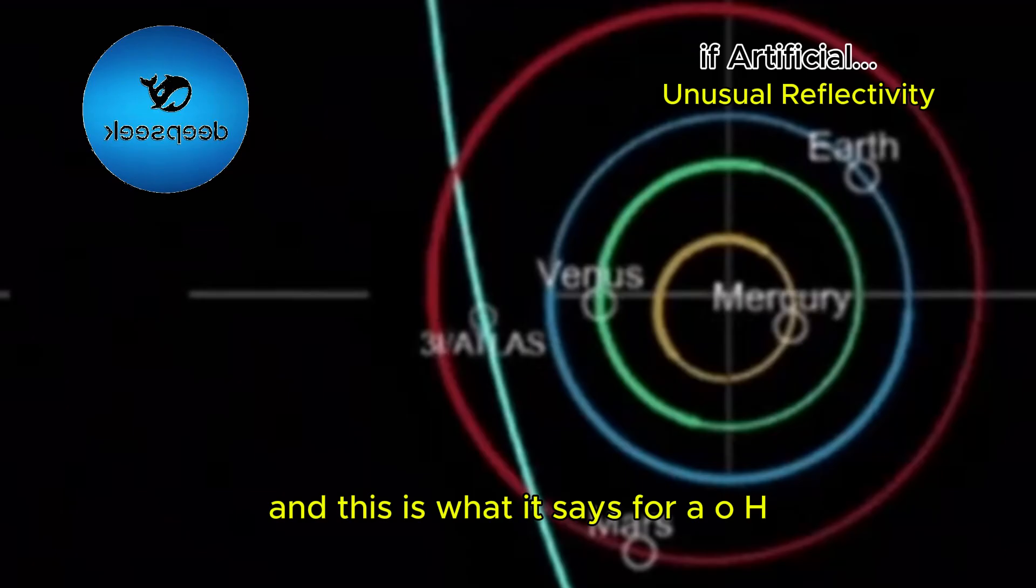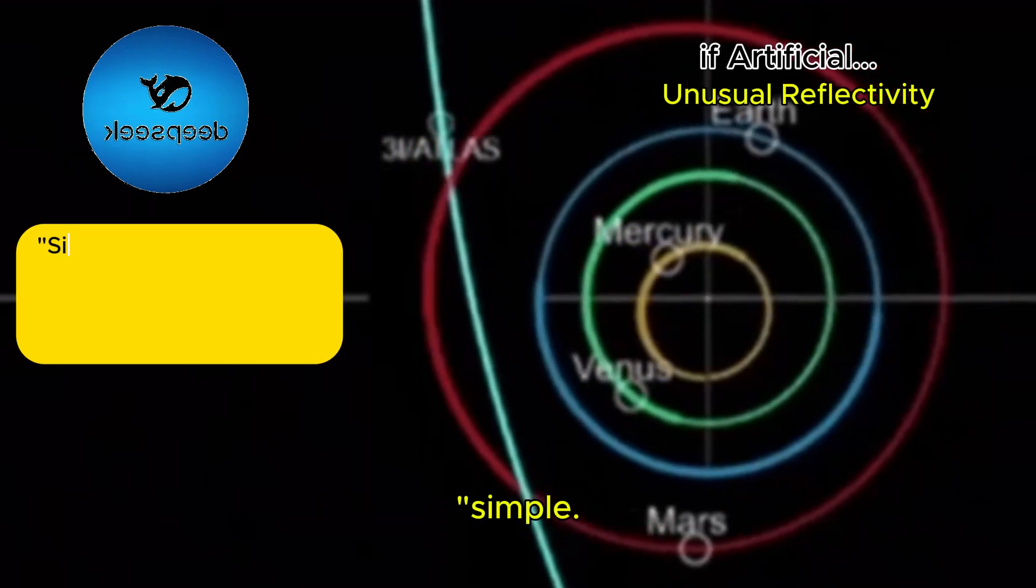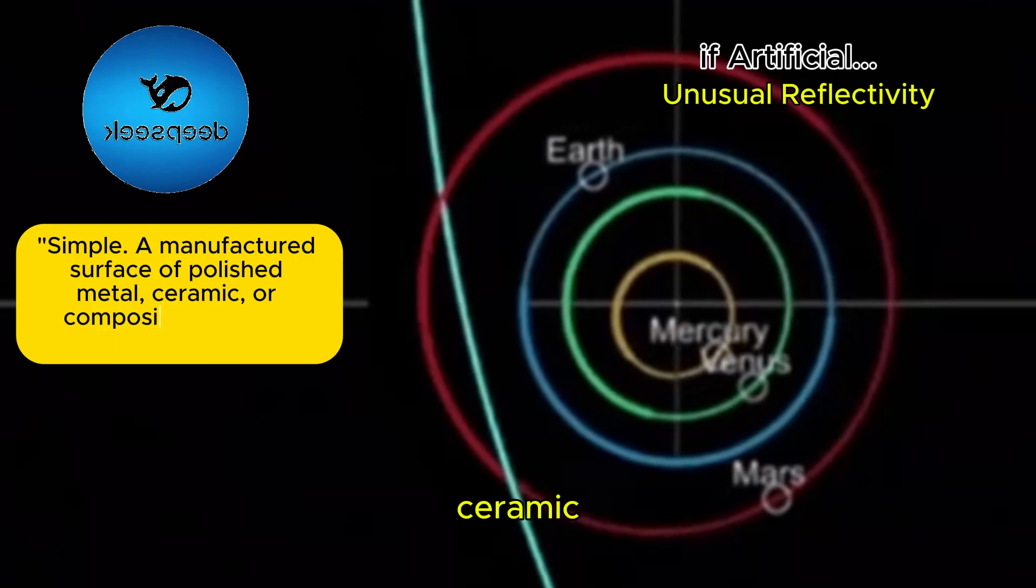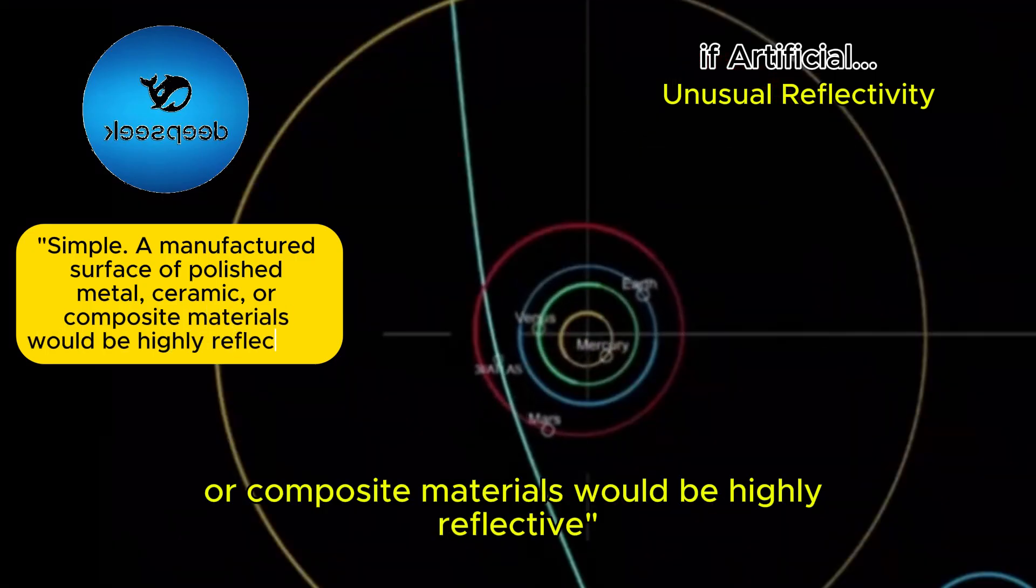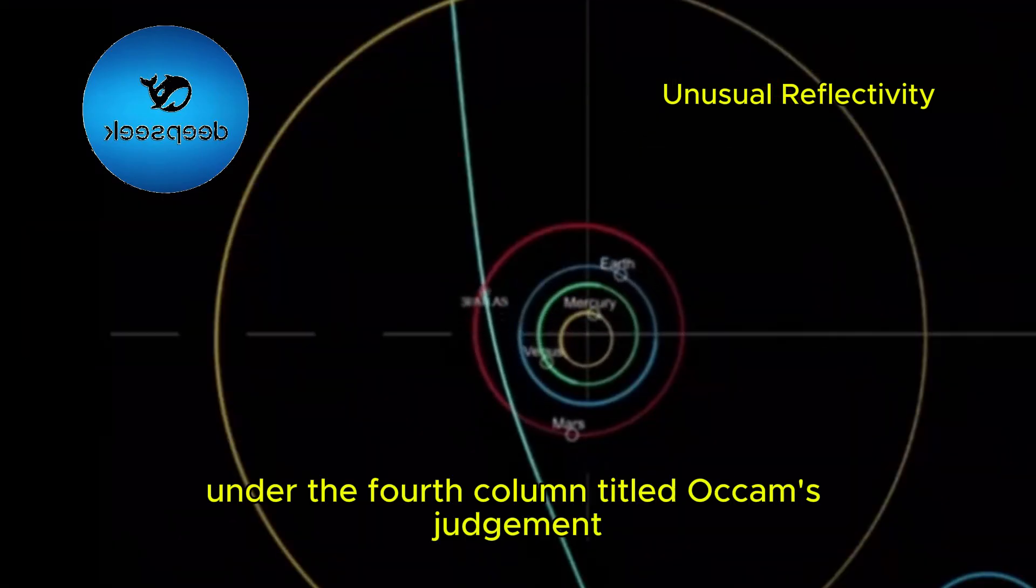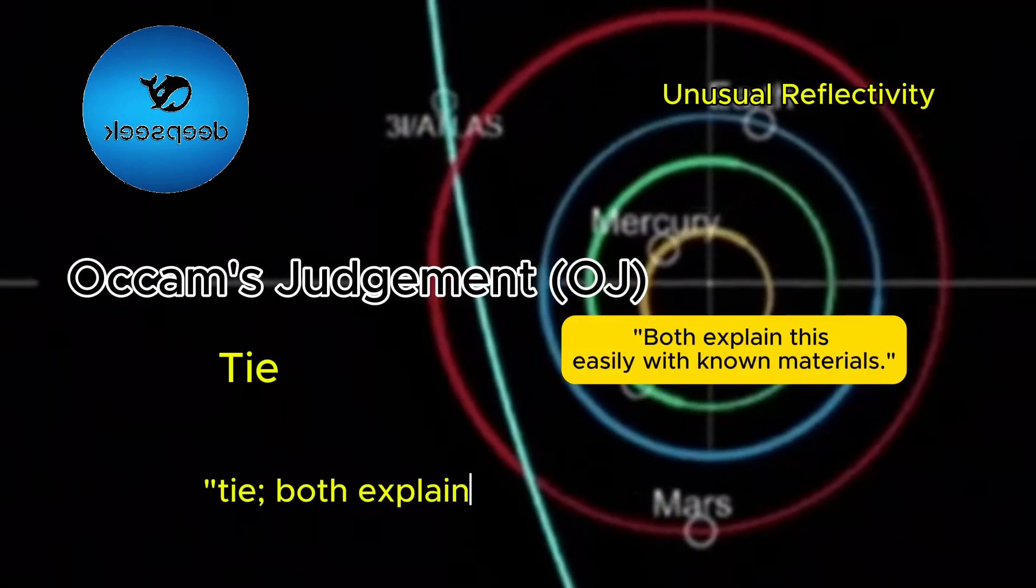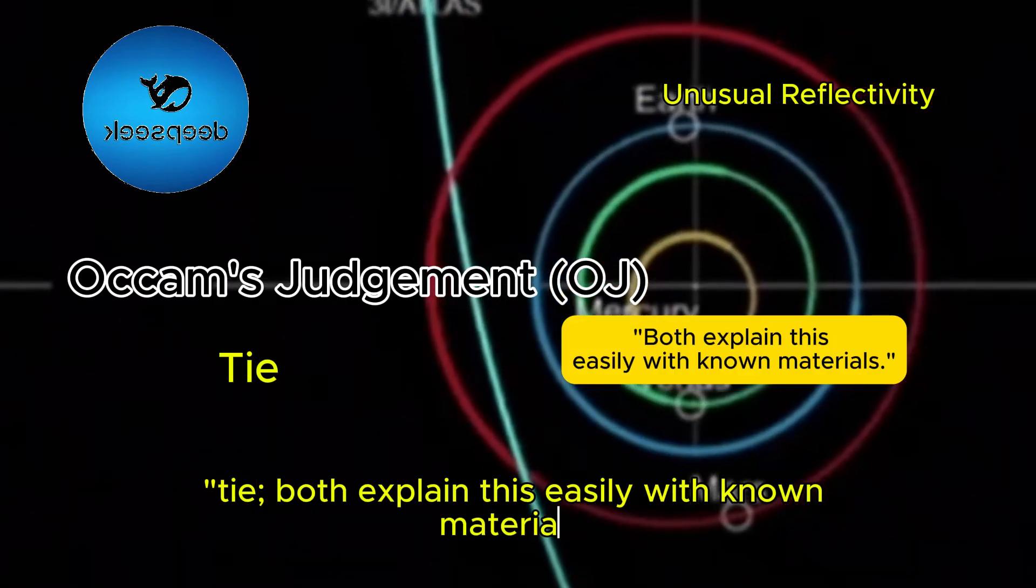And this is what it says for AOH, quote: simple. A manufactured surface of polished metal, ceramic, or composite materials would be highly reflective. Under the fourth column titled Occam's judgment, it declares: tie. Both explain this easily with known materials.